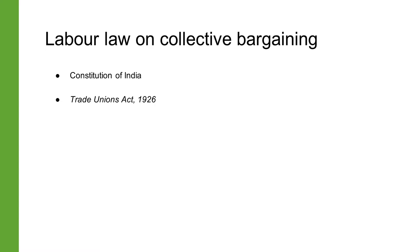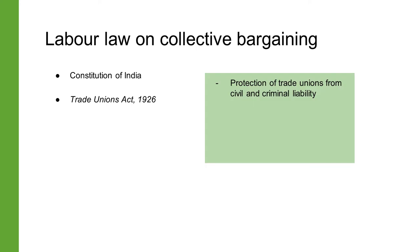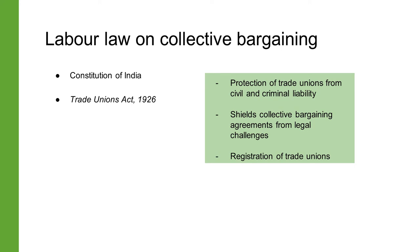The Trade Unions Act of 1926 was enacted to govern and protect trade unions. It shields members of trade unions from civil and criminal liability and protects collective bargaining agreements from being challenged on the grounds that they restrain trade. It also lays out conditions that registered unions must comply with, including the procedure for registration, what must be included in union rules, the minimum proportion of members who must be actually employed in the industry concerned, and the furnishing of annual returns.